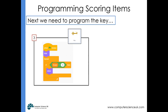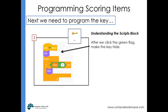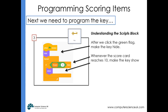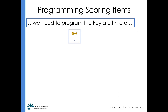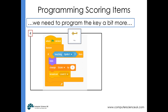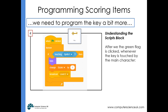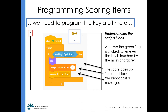We program the end-of-level item so that it's hidden to begin with, but when the score reaches a certain number — in this case ten, but it might differ for your game — we make it appear. After the green flag is clicked the item hides, then when the score reaches the target it shows. We also need another script in this sprite that constantly checks if it is touched by the main character, and once touched, the score goes up by one, it hides, and it broadcasts a message so the stage knows to change the backdrop.